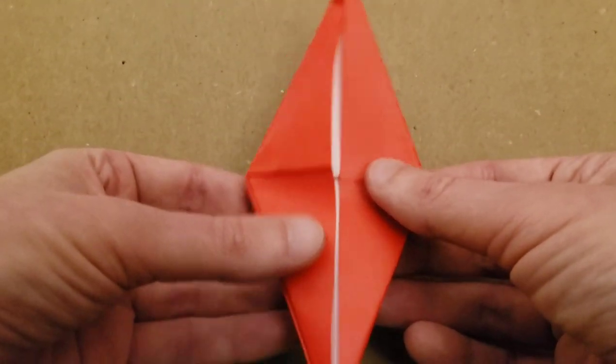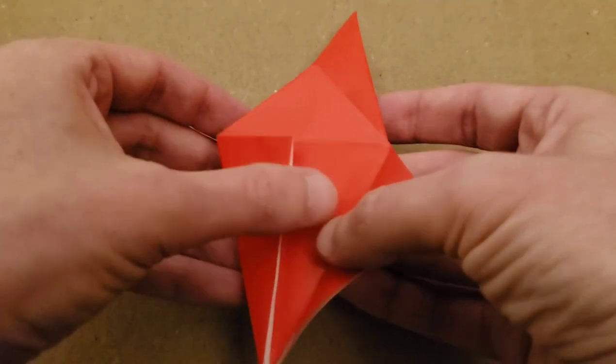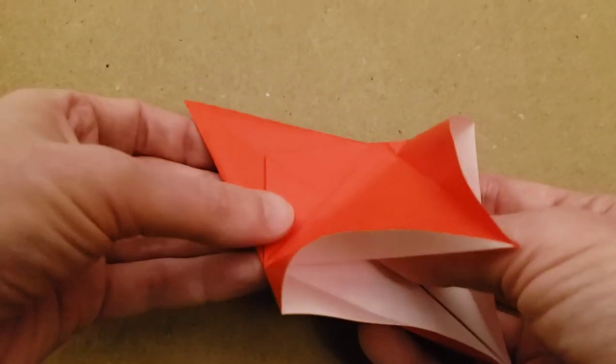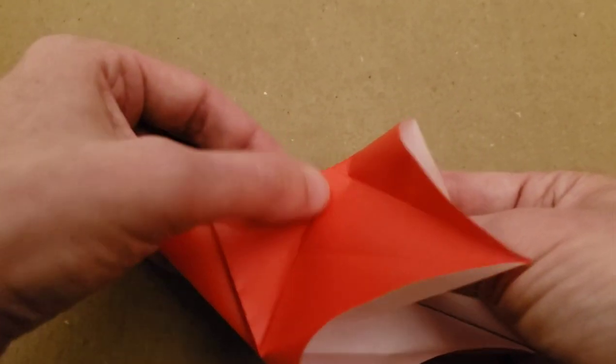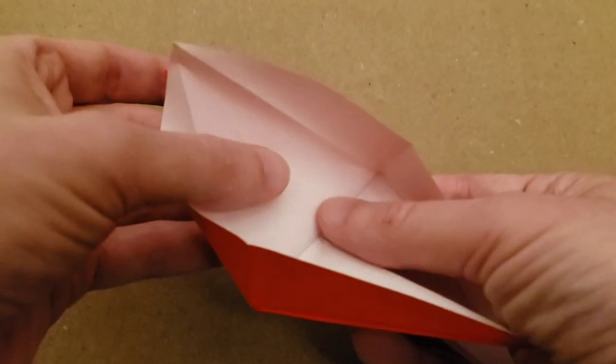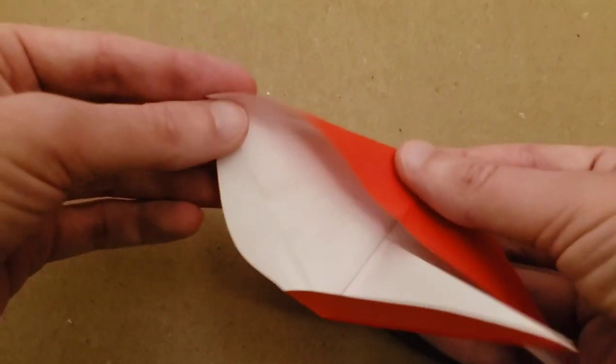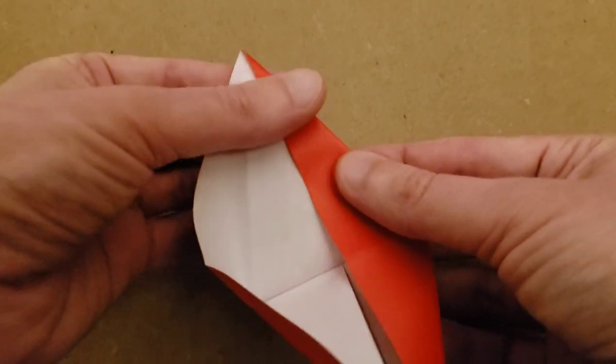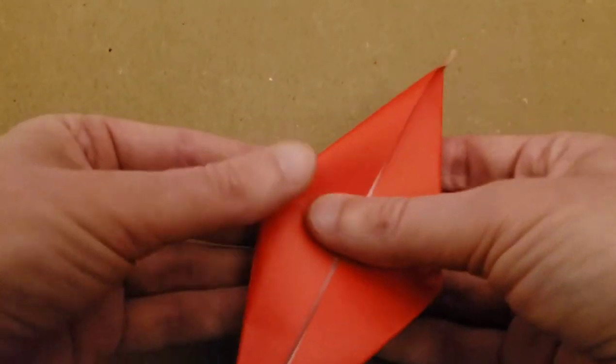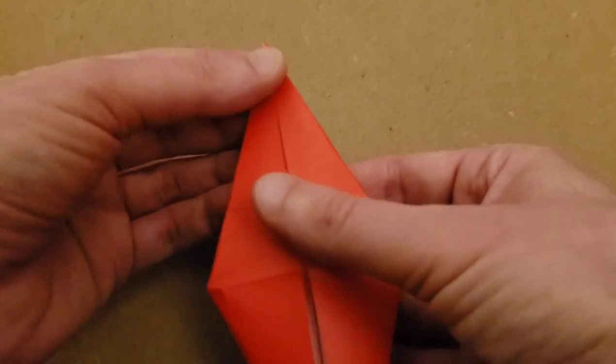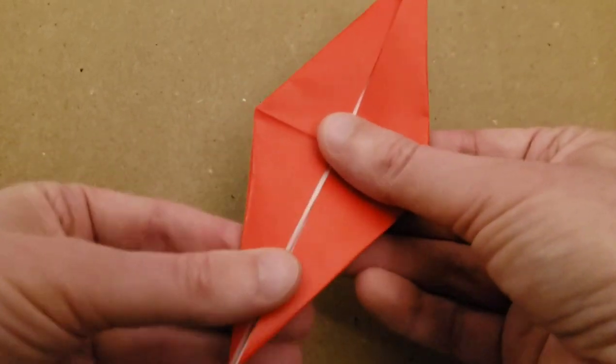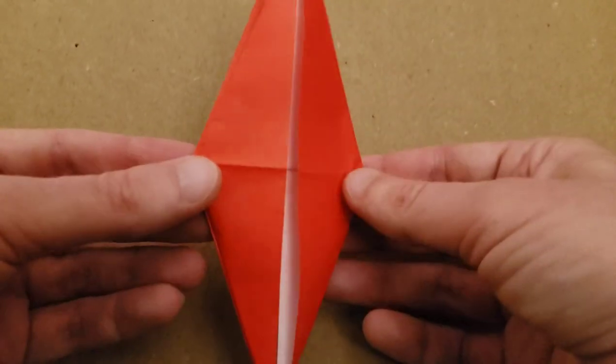And then we do the same thing on the other side. Turn it over, open up your flaps, lift up just that top layer, and use this crease here to help you. Pinch it down, use your creases. And there you are. And believe it or not, we are pretty close to being finished.